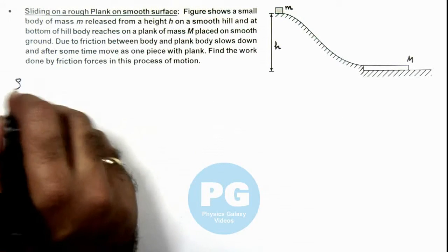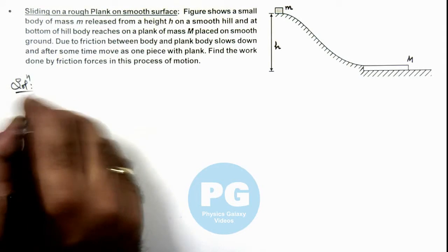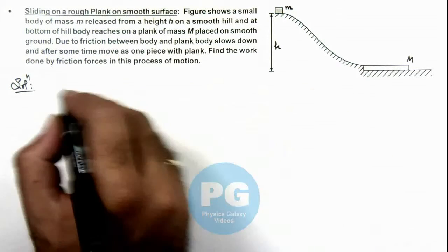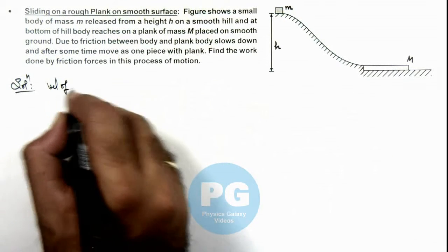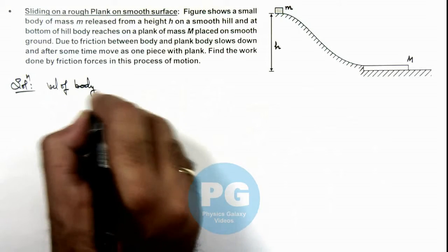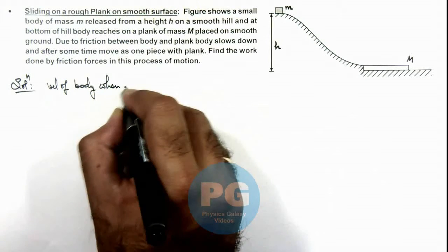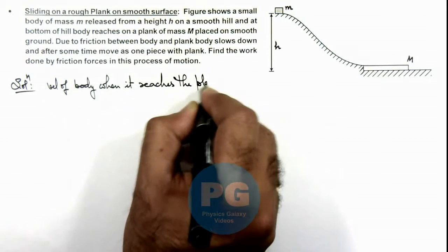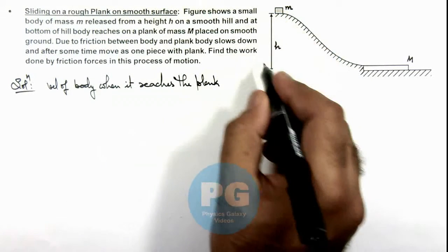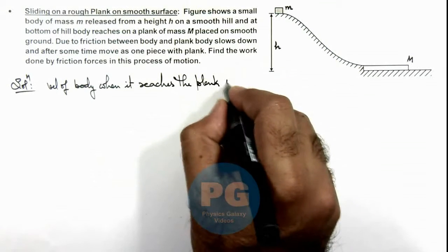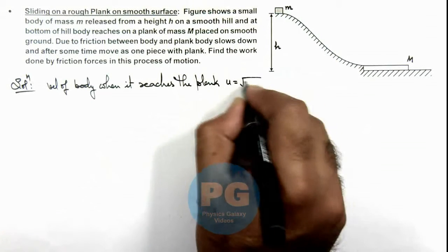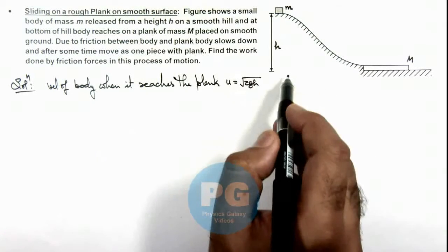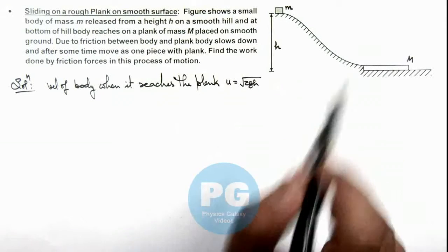Here, we can first calculate, on the smooth hill when the body reaches the bottom. First we can write the velocity of body when it reaches the plank. So we can write as it has fallen by distance h its initial speed u can be written as root 2gh directly by conserving energy, or by transforming work done by gravity on body to its kinetic energy.